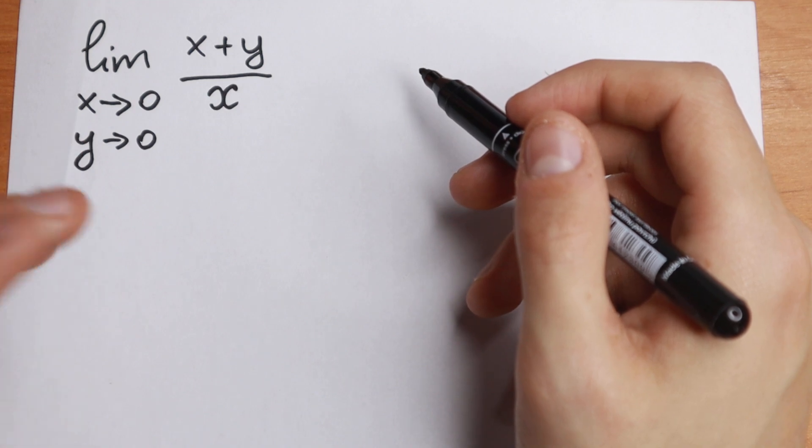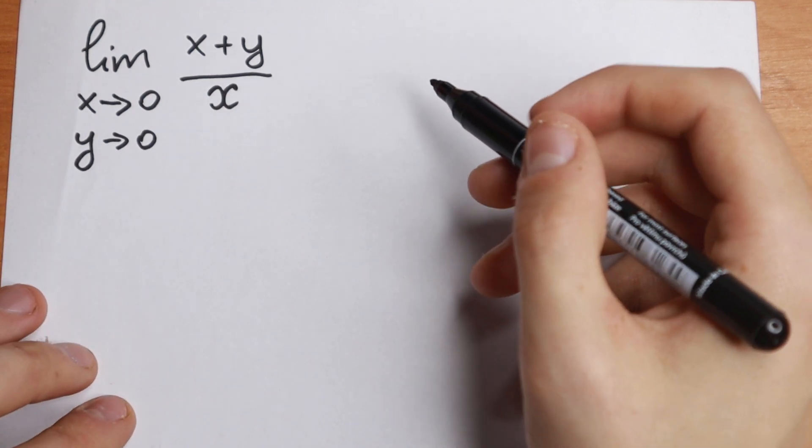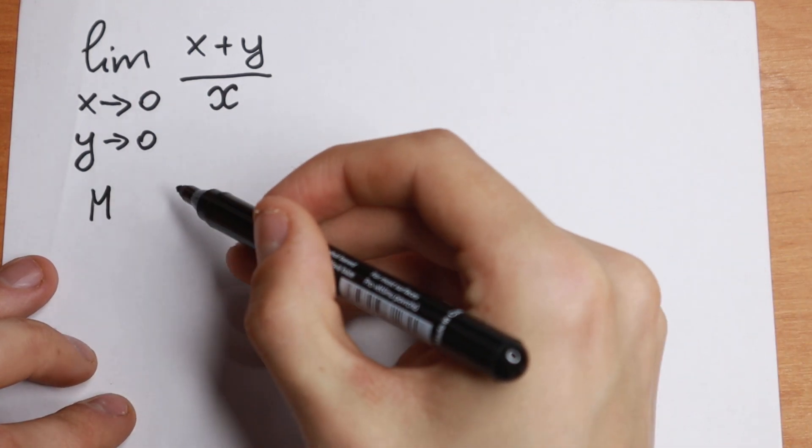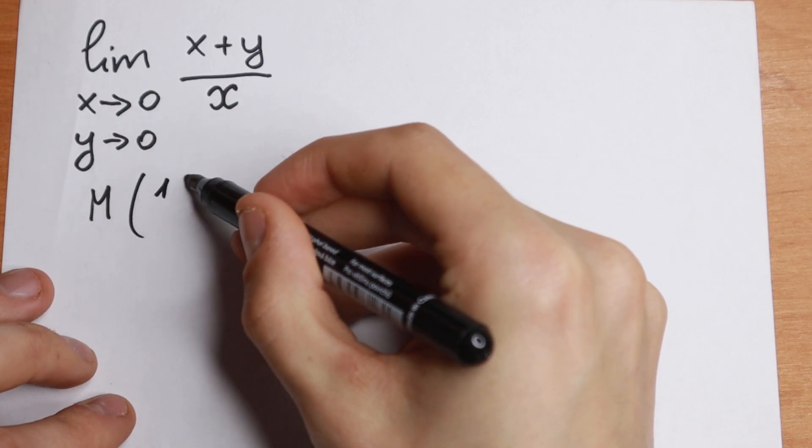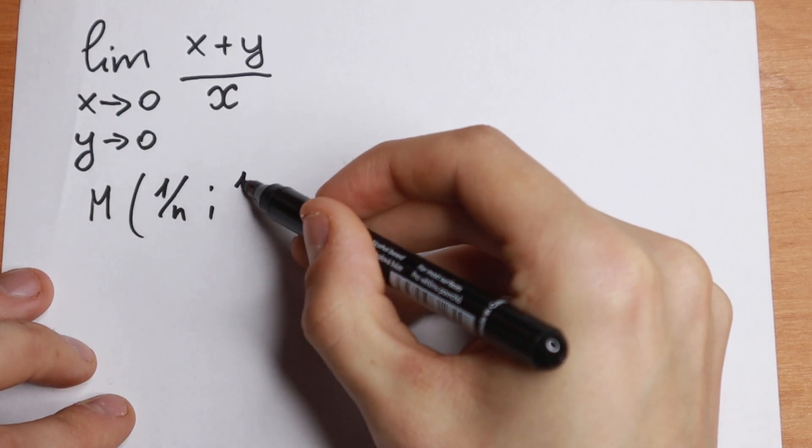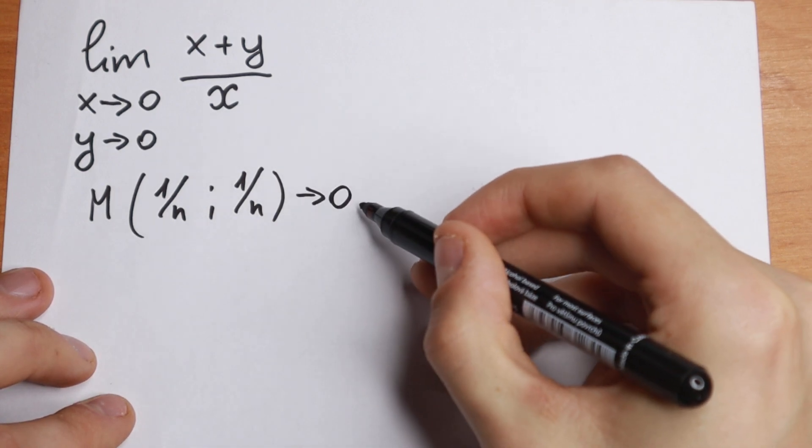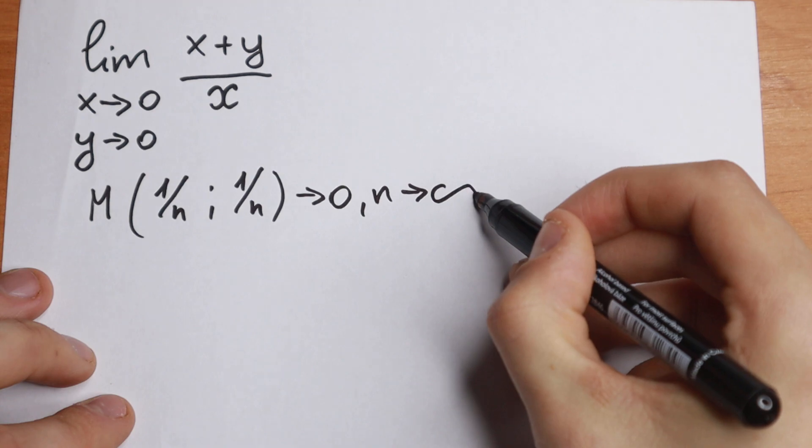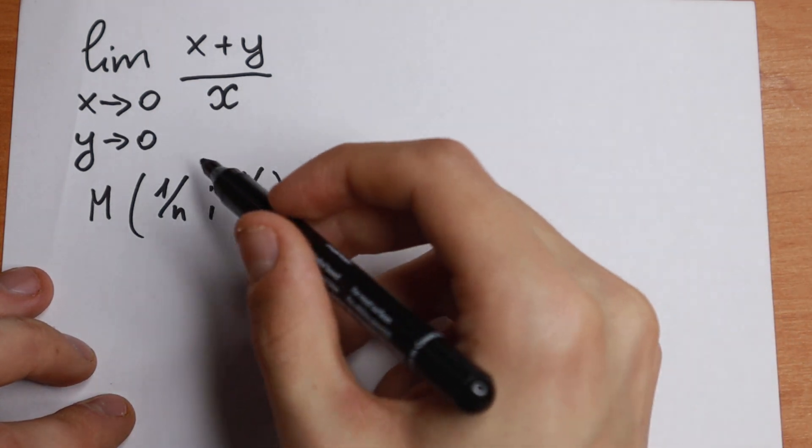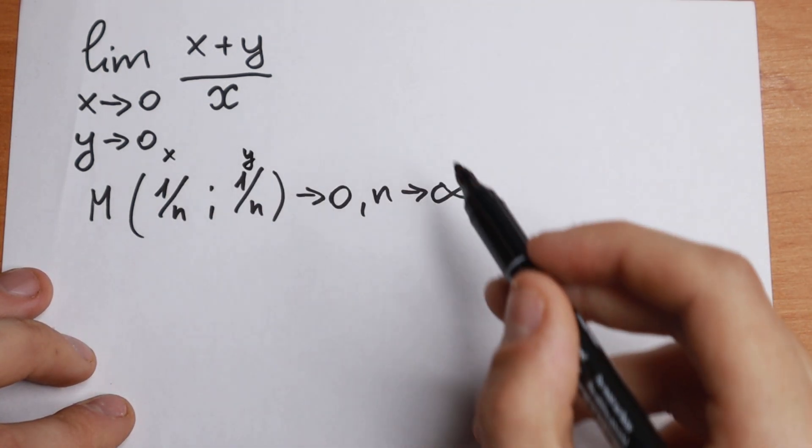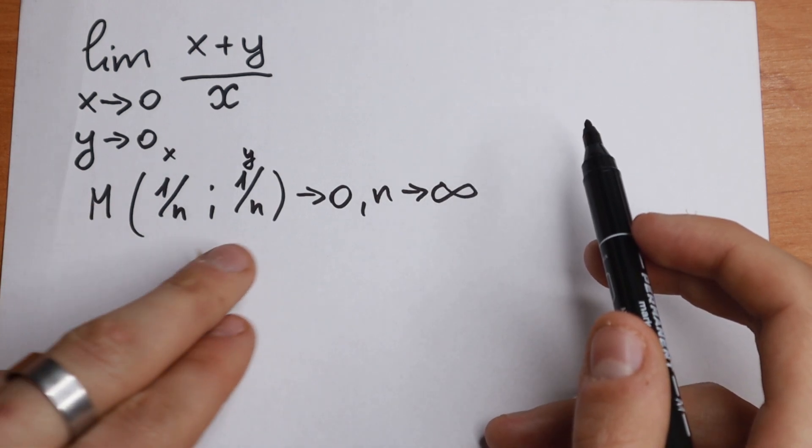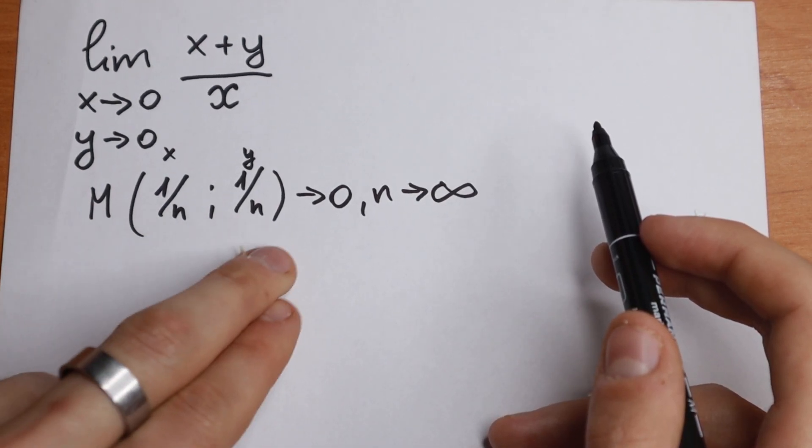First of all, I want to show you a really good approach how to solve this limit. Take a look. If I have, for example, a dot M with 1 over n in x and 1 over n as over y, this dot approaches to 0 when n approaches to infinity. So right here is over x, right here is over y, and when n approaches to infinity we have 0 and 0 as our coordinates.